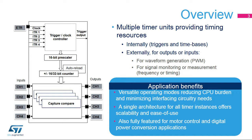The auto-reload register defines the counting period. In down-counting mode, the counter is automatically reloaded with the period value when it underflows. In up-counting mode, the counter rolls over and is reset when it exceeds the auto-reload value. An update event is issued when the counter underflows or overflows, and a new period starts. It triggers an interrupt or DMA request used for adjusting timing parameters synchronously with its period, which is useful for real-time control.